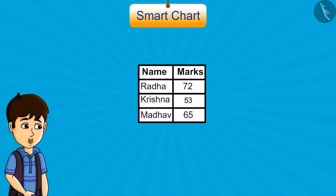For example, look at this data. Here are the marks scored by three students in maths. Radha got 72, Krishna got 53 and Madhav got 65.